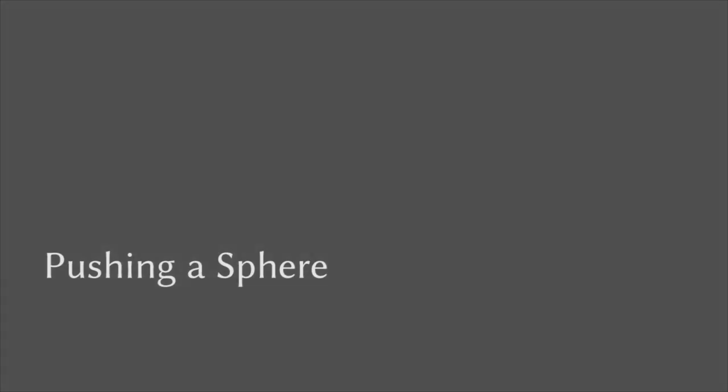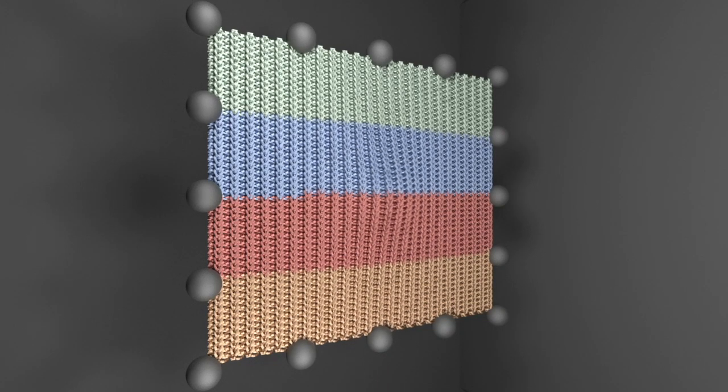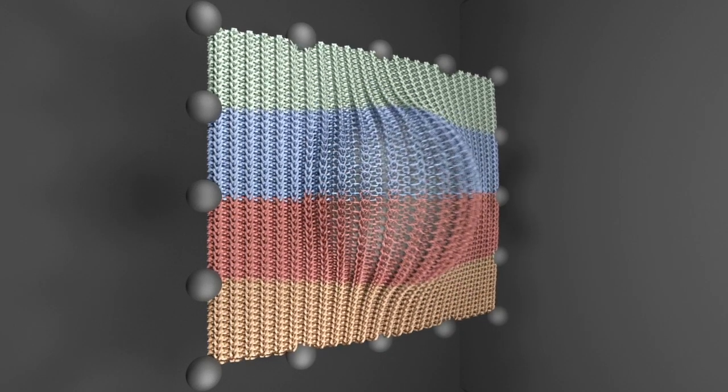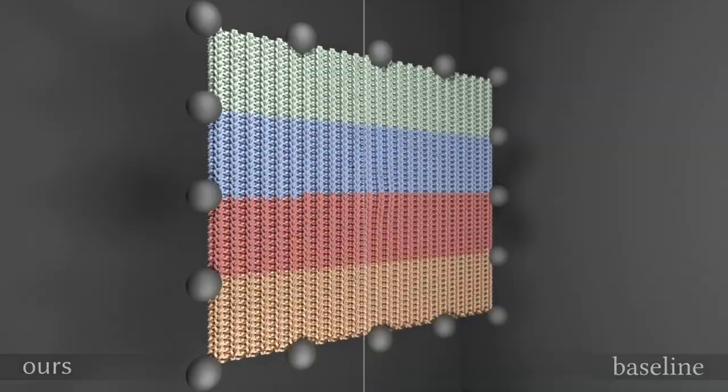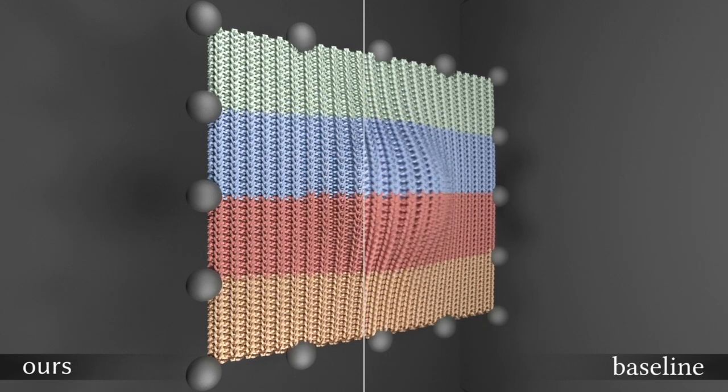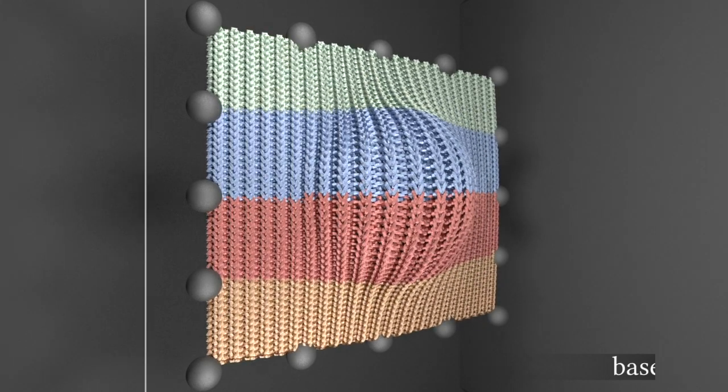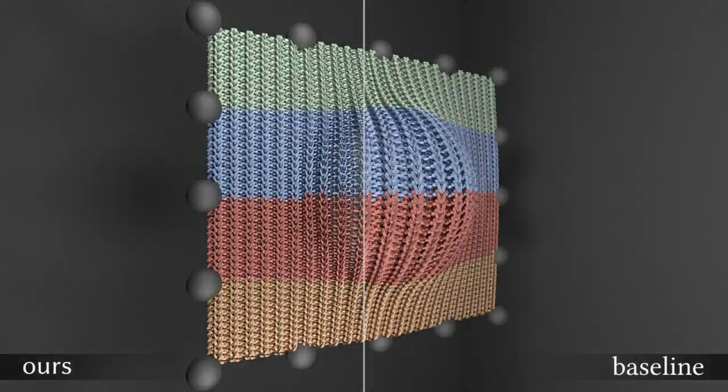In this example, we show another piece of knitted cloth fabric stretched by a moving rigid sphere. The contact forces resulting from the movement of the sphere cause complex deformations and appearance changes across the cloth surface, which are successfully captured by our technique.